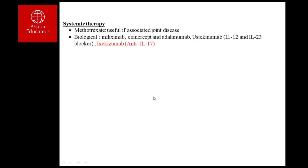Other systemic therapies include methotrexate, which is useful when there is associated joint disease — psoriatic arthritis affects about 20% of patients. Biological drugs include anti-TNF agents such as infliximab, etanercept, and adalimumab — the same drugs used in rheumatoid arthritis. Ustekinumab is an IL-12 receptor blocker, and secukinumab is an anti-IL-17 agent, targeting the key interleukin driving keratinocyte proliferation.